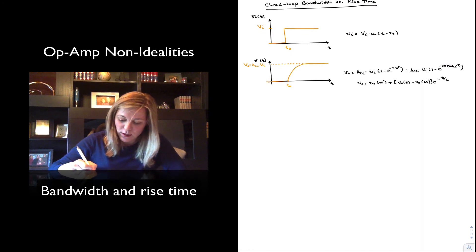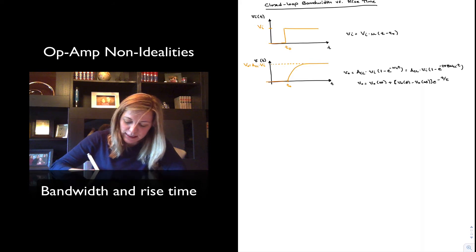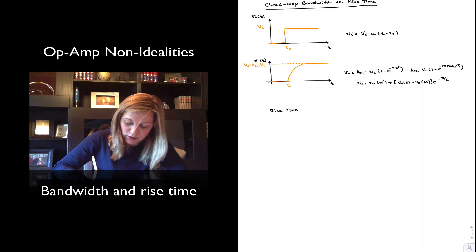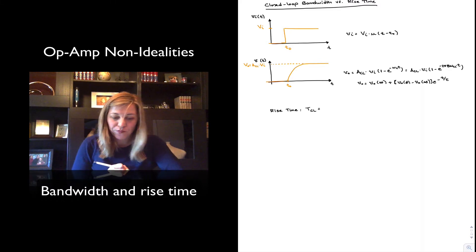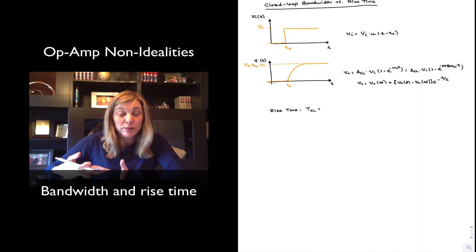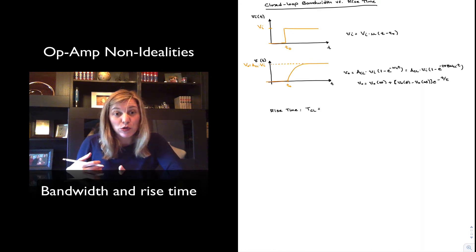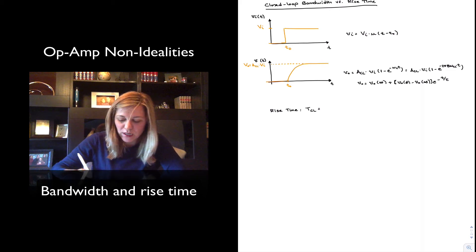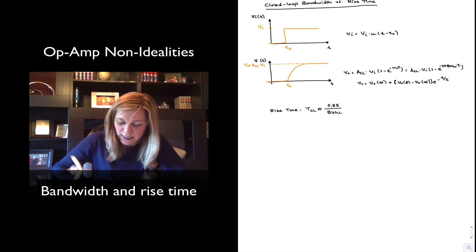Now, the rise time typically expressed as TCL, or at least that's the rise time due to the bandwidth limitation. We know that it is going to be, or we can observe experimentally that it's going to be inversely proportional to the closed loop bandwidth. And in reality, it can be approximated as 0.35 divided by the closed loop bandwidth in seconds.